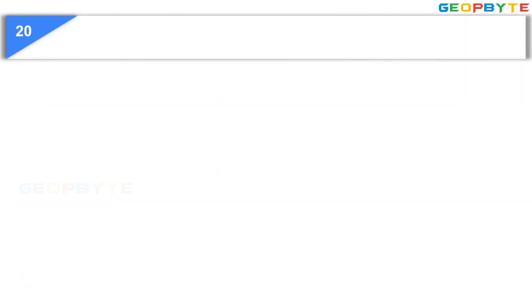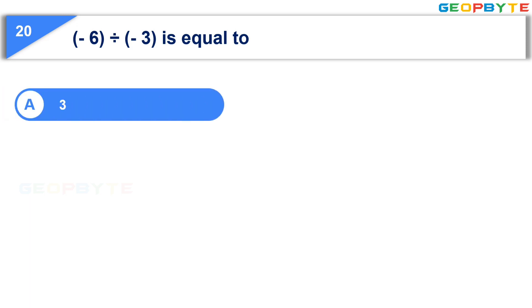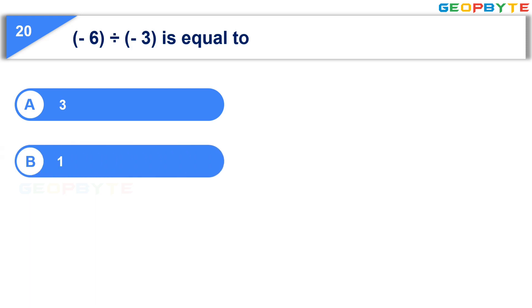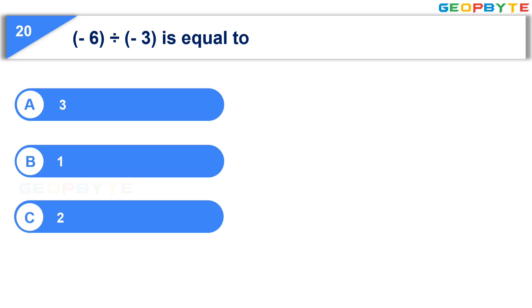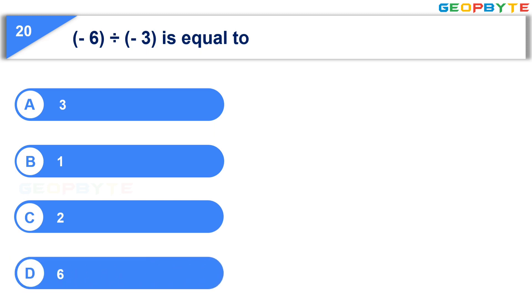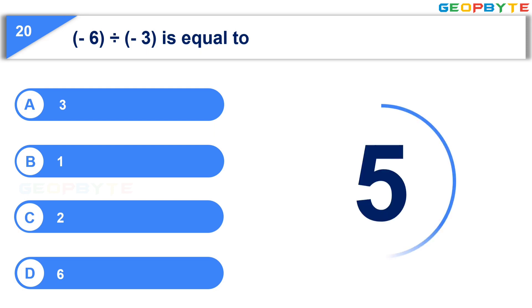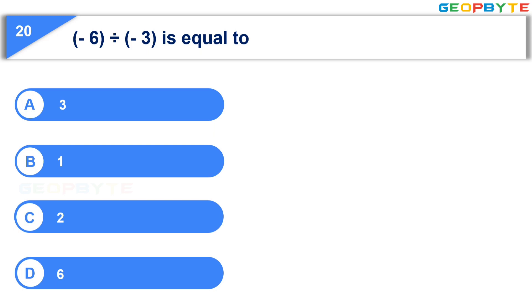The twentieth and last question: Minus 6 divided by minus 3 is equal to — Option A: 3. Option B: 1. Option C: 2. Option D: 6. Your time starts now. Your time is up. And the correct answer is Option C: 2.